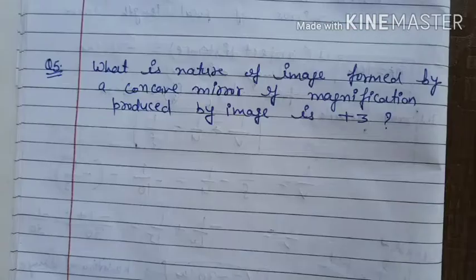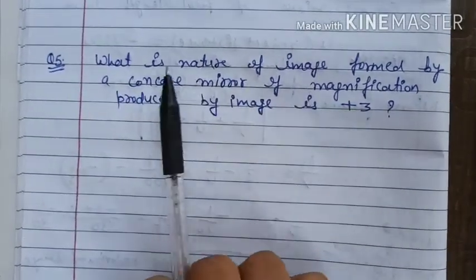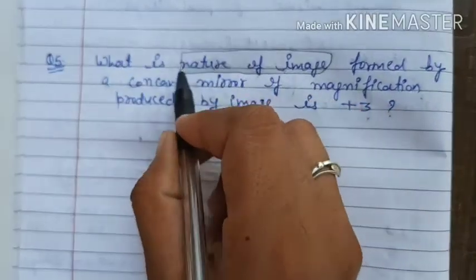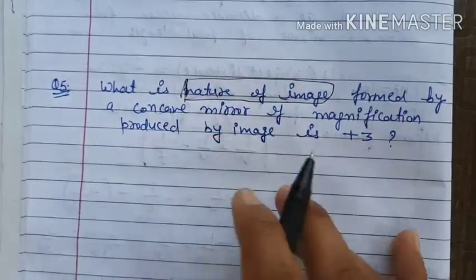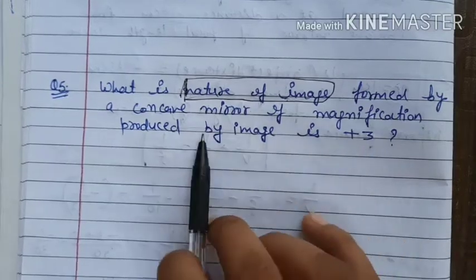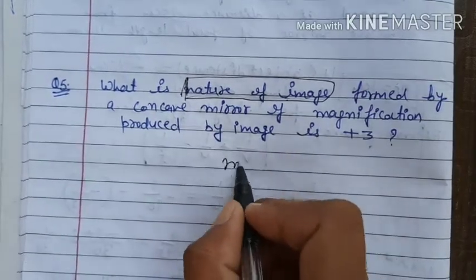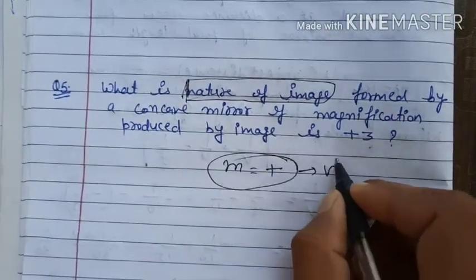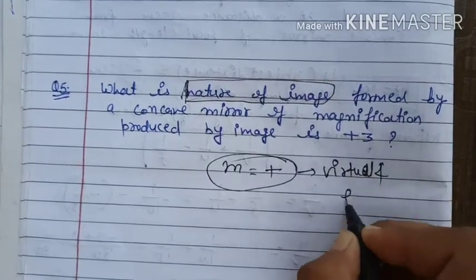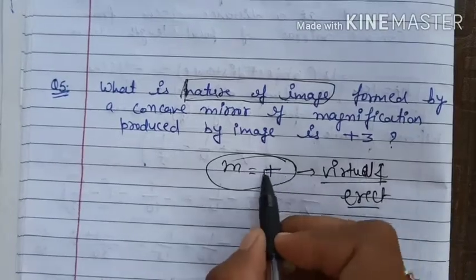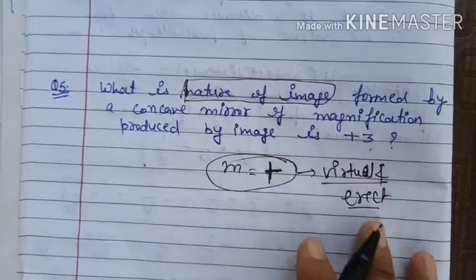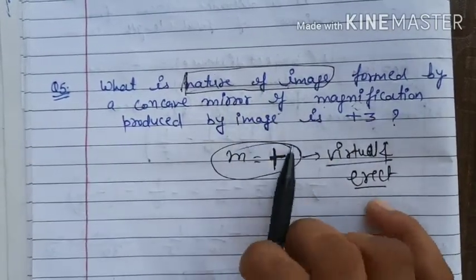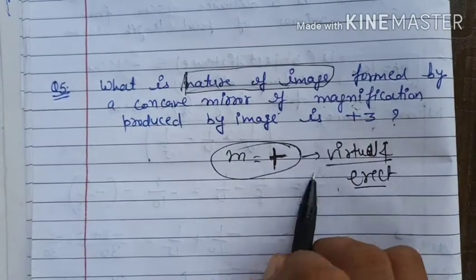Question number five: what is the nature of the image formed by a concave mirror if the magnification produced is plus three? Since the magnification is positive, the image is virtual and erect. If the sign is plus, the image is always virtual and erect. So the answer is: virtual and erect.